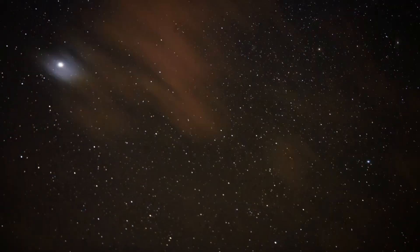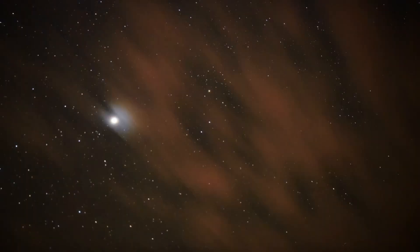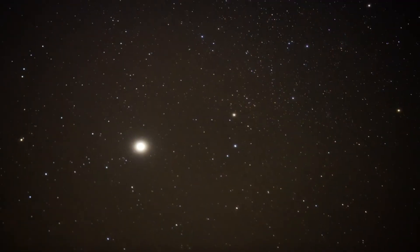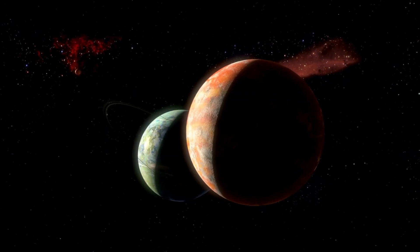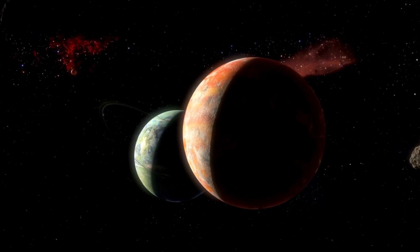Proxima b, from distant candidate to tangible world. Proxima b has long been one of the most talked about exoplanets. It's nearly the same size as Earth and sits in the so-called habitable zone where conditions could in theory allow liquid water to exist.